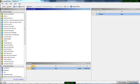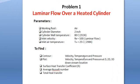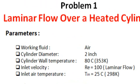Today we will solve a fluid flow problem — laminar flow over a heated cylinder. The working fluid is air, cylinder diameter is 2 inches, and the cylinder wall temperature is 80 degrees C (353 Kelvin). The inlet velocity will be based on Reynolds number 100 for laminar flow, and the inlet air temperature is room temperature, 25 degrees C or 298 Kelvin.